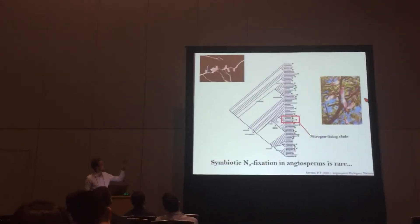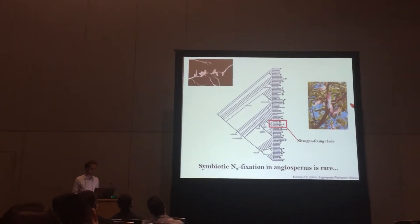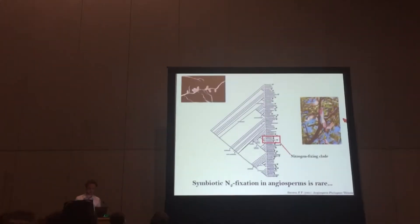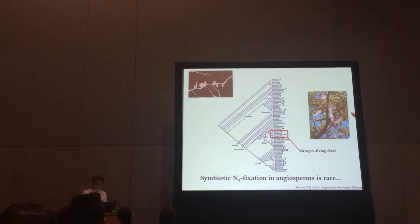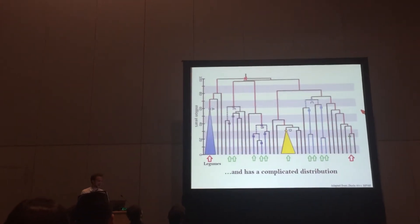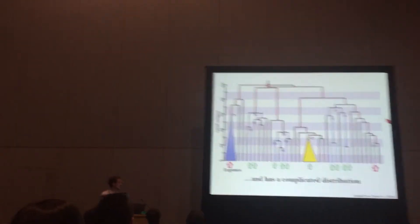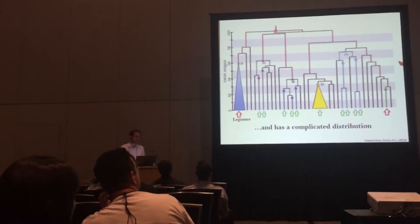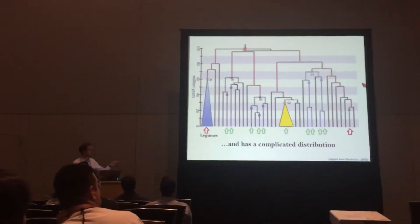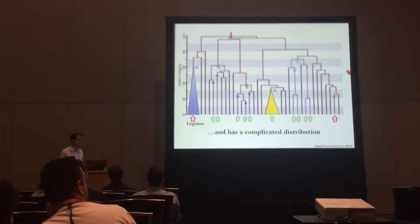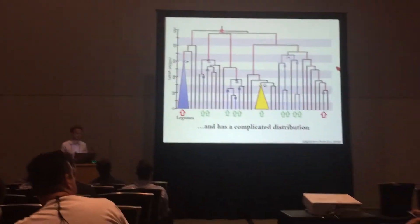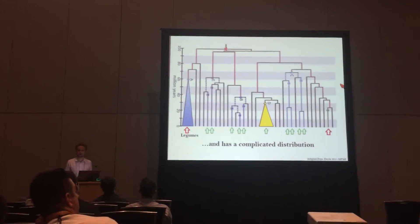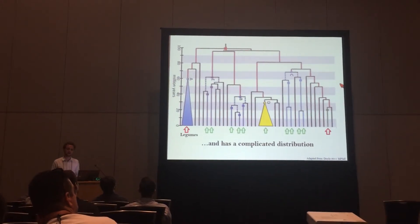Across the whole diversity of plant life, which you see here, it's found only in those four orders marked with a red box. And even within those orders it has a complicated distribution — found in those clades marked with arrows at the bottom — and within those clades in turn there's further variation, sometimes even greater discrepancies.